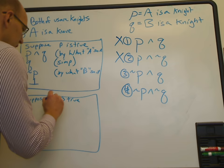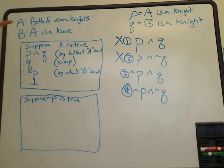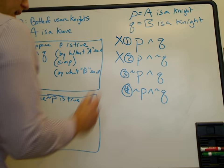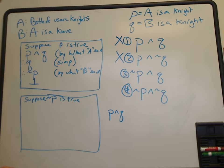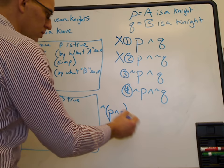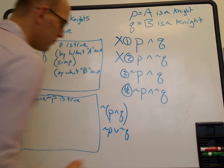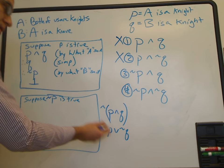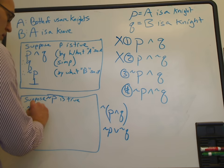So let's suppose not-P is true. If not-P is true, then A is a Knave. If A is a Knave, then what A said is a lie, and the opposite of it is true. The opposite of 'both of us are Knights' (which is P and Q) is, by De Morgan's Law, not-P or not-Q. So the opposite of 'both of us are Knights' is 'A is a Knave or B is a Knave.' Therefore not-P or not-Q.